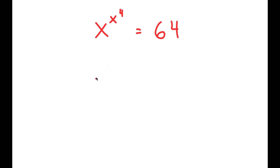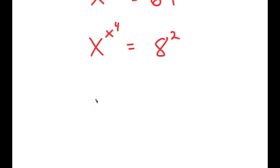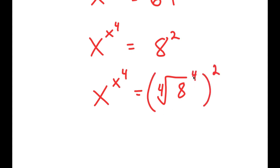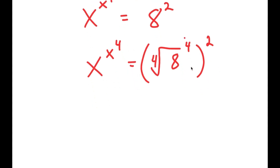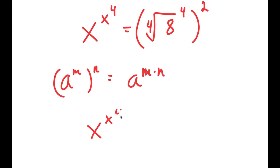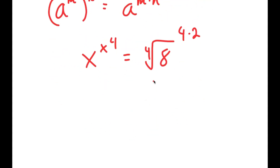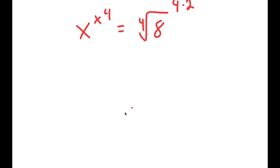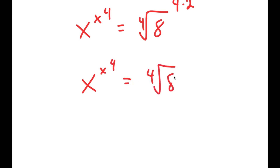To solve this, I'll start by rewriting 64 as 8 squared, so I get x^(x^4) = 8². Now I'm going to rewrite 8 squared as the fourth root of 8 to the power of 4, squared. Using the rule a^(m^n) = a^(m·n), this equals the fourth root of 8 to the power of 4 times 2, which is the fourth root of 8 to the power of 8.